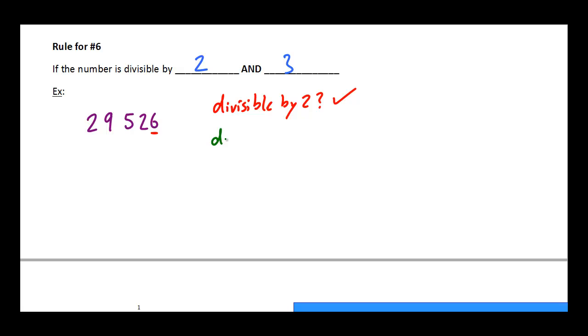The next thing we have to ask is, is it divisible by 3? And remember the rule for 3 is we have to add up the individual digits. So 2 plus 9 plus 5 plus 2 plus 6, and this is all going to add up to 11, 16, 18, 24. So is 24 divisible by 3? Yes, it is, which means this entire number here is divisible by 6.